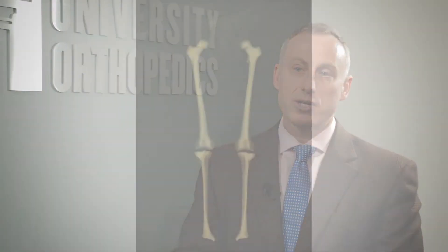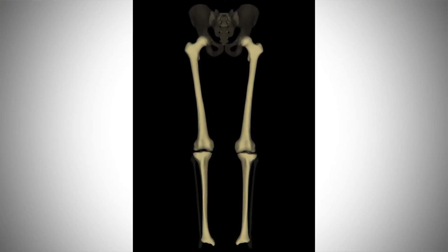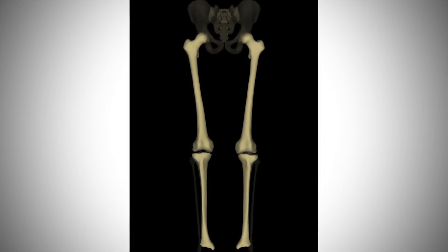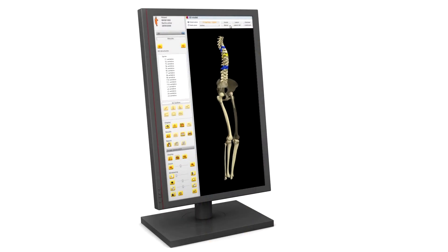It goes into the world of adult reconstruction — the ability to get a long-leg film to really look at how the patient's leg is lined up, to see if there's a difference in the length of the leg, to evaluate that in three dimensions, and even template and simulate their surgery before they do it — all through the use of a very quickly obtained, low-radiation scan. That has been revolutionary.